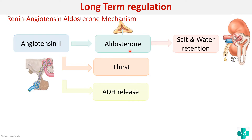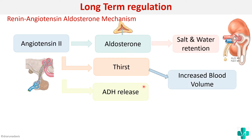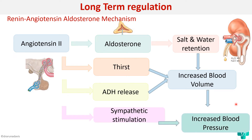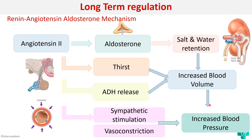Because of thirst, the person will drink more water, and ADH release will also cause an increase in blood volume. So by release of aldosterone, stimulation of thirst, and release of anti-diuretic hormone, blood volume will be increased, thereby increasing blood pressure to normal. Additionally, angiotensin 2 can cause sympathetic stimulation and vasoconstriction, both of which act together to further increase BP and bring the drop in BP back to normal.